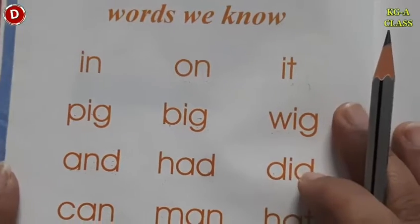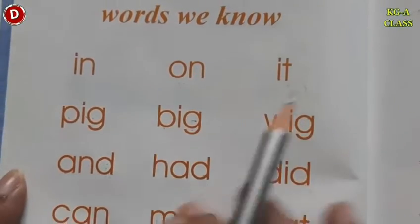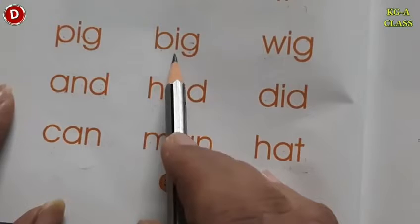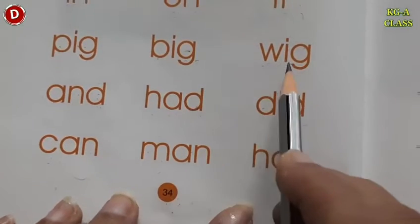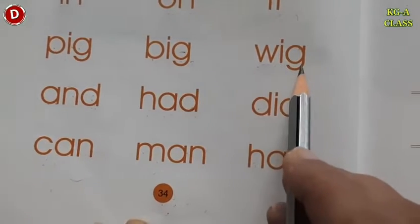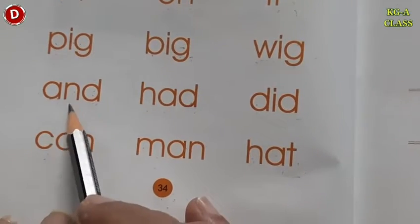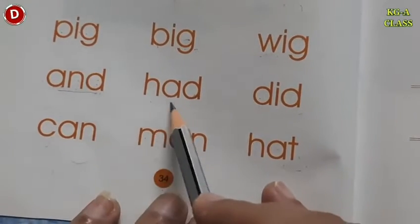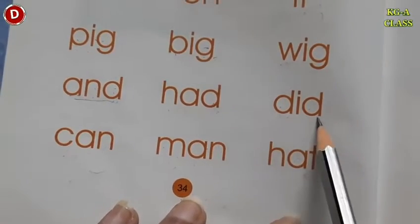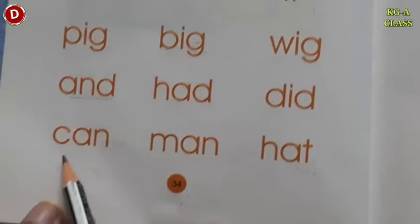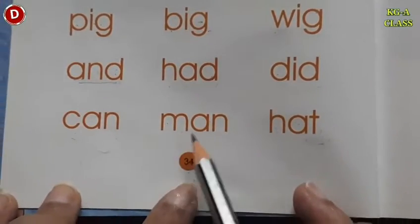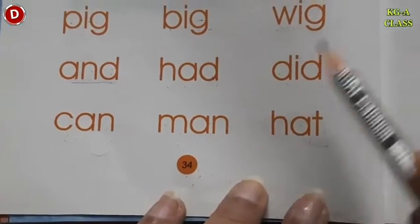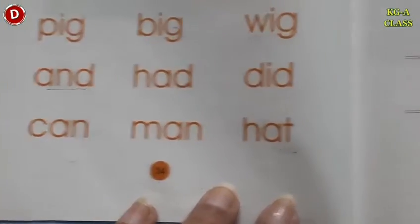We will read with the help of phonic sounds. P-I-G — Pig, B-I-G — Big, V-I-G. A-N-D — AND, this is a sight word. A-N-D — AND. Had, did. K-A-N — kan, M-A-N — man, and hat. In this way, children, you have to read these words.